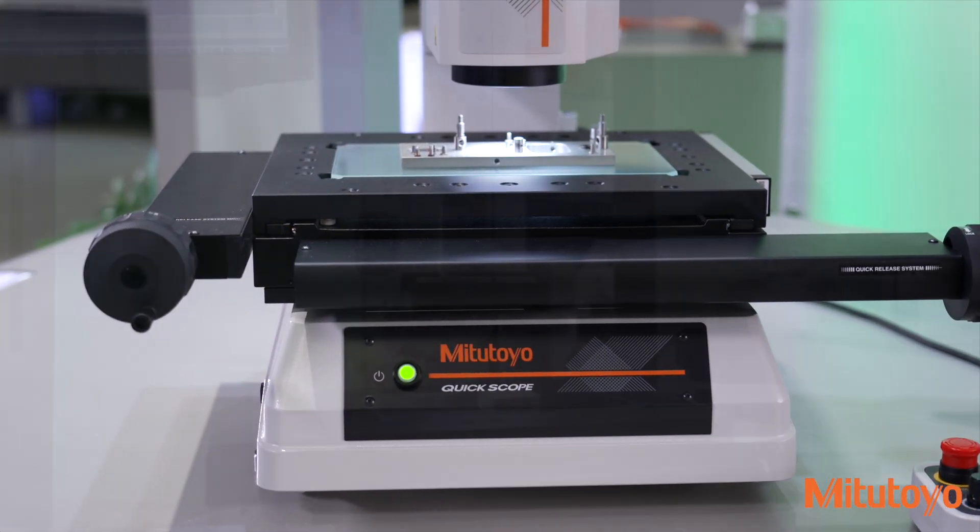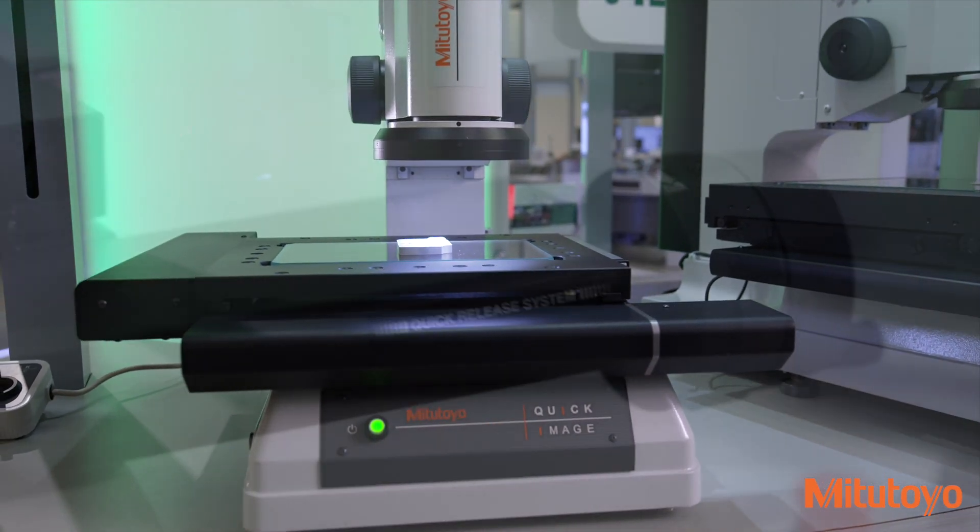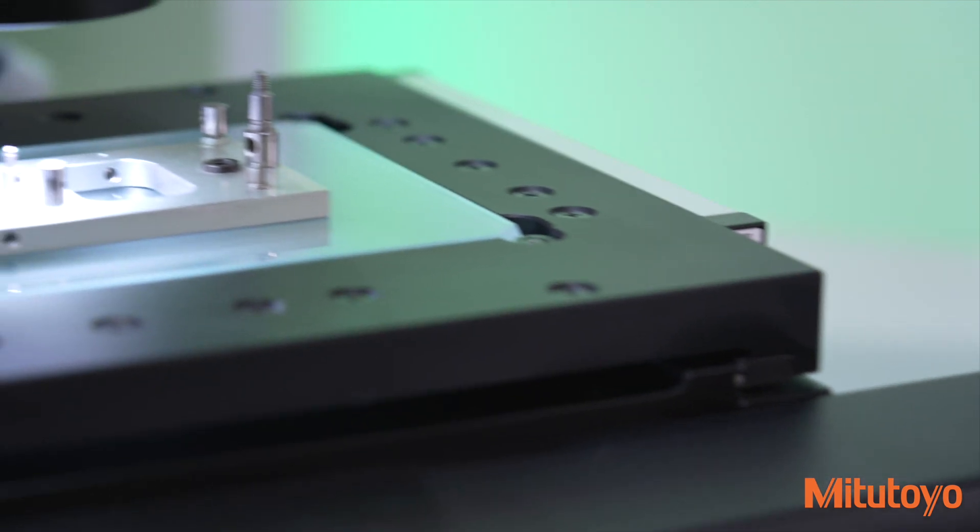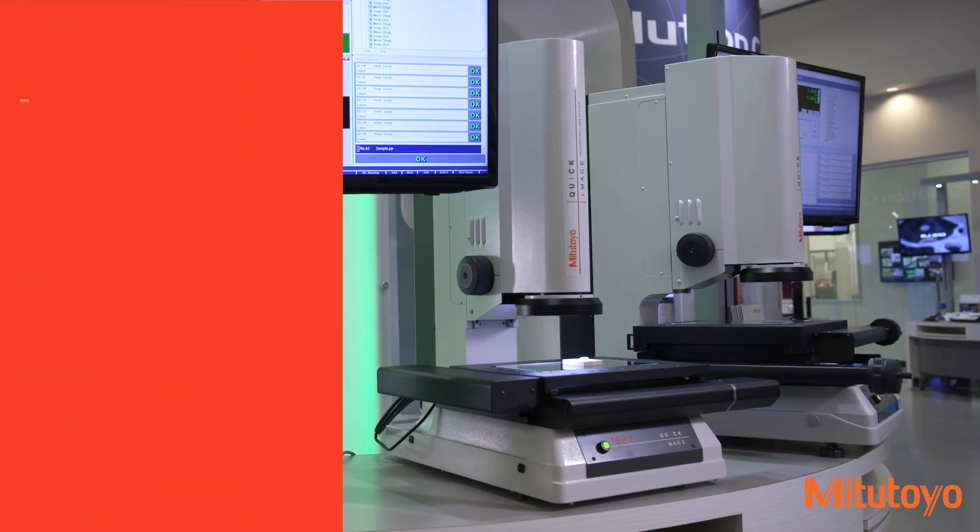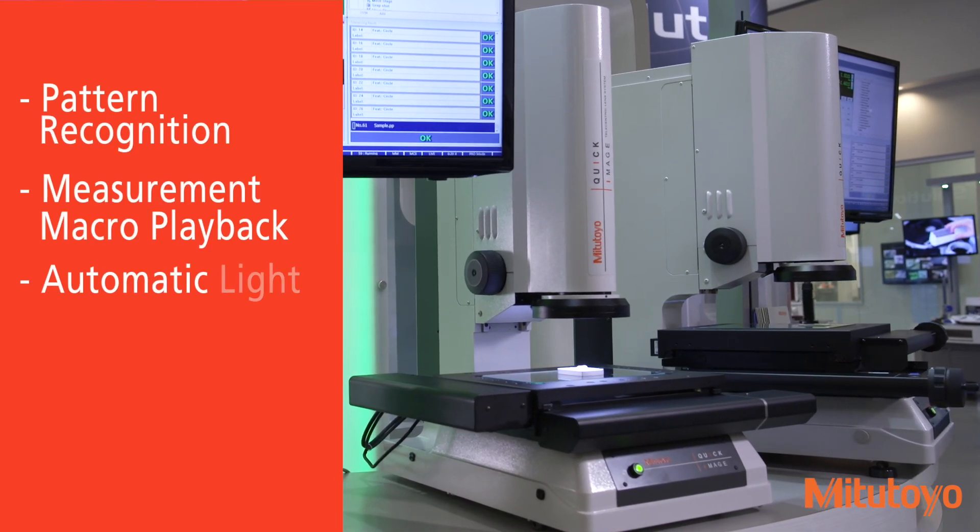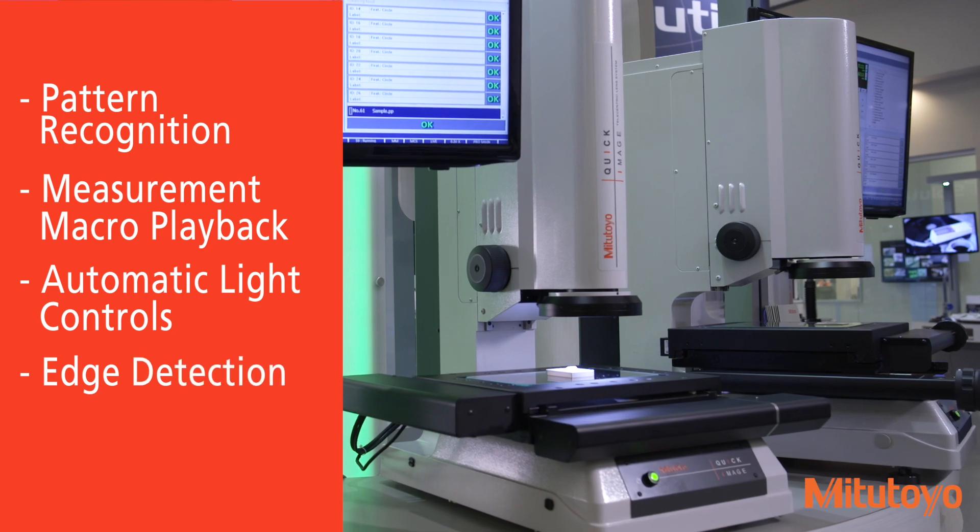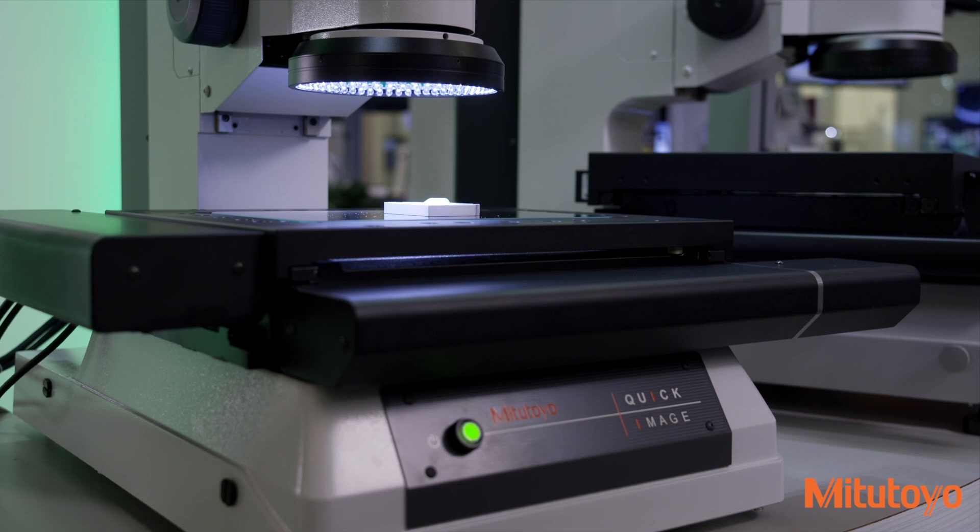Mitsutoyo's Quickscope and Quickimage series offer easy-to-use, economical benchtop vision inspection solutions with capabilities that surpass the competition and features you would expect from higher-end machines. Pattern recognition, measurement macro playback, and automatic light controls and edge detection are just a few examples of the inspection capabilities these machines have to offer.